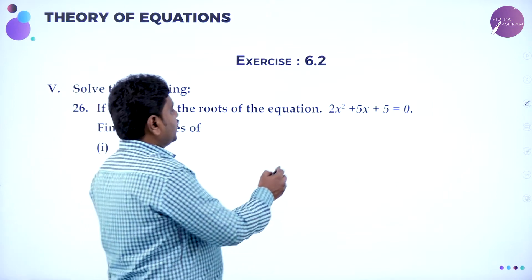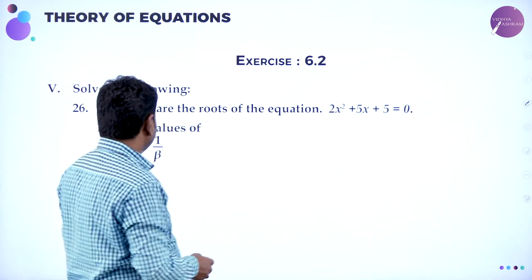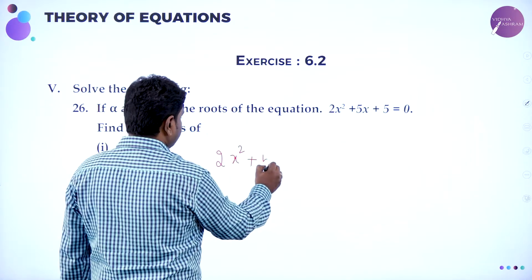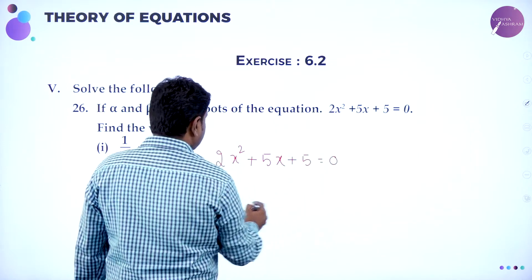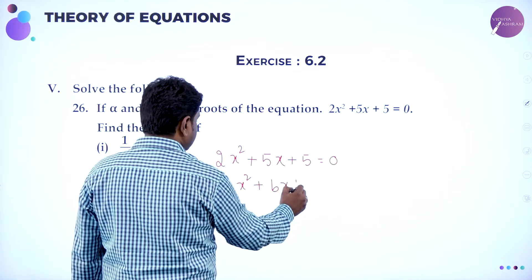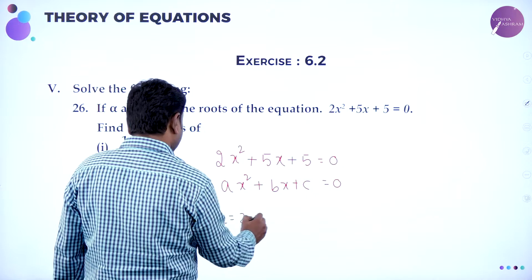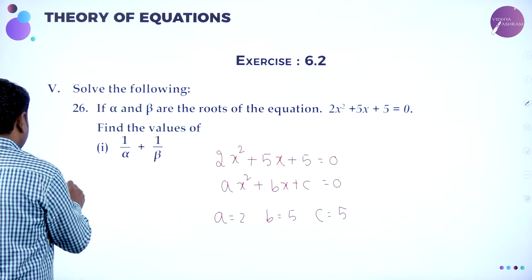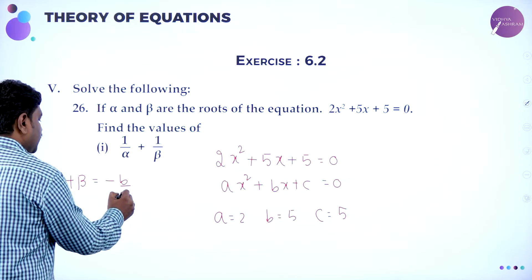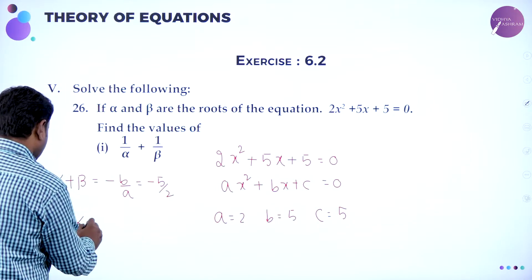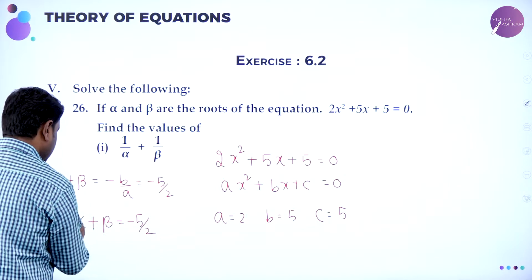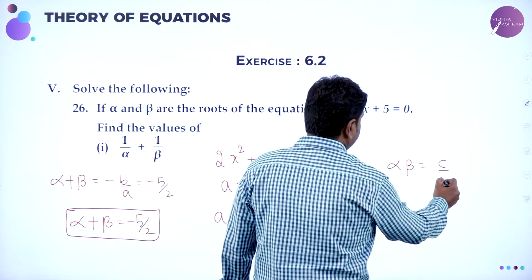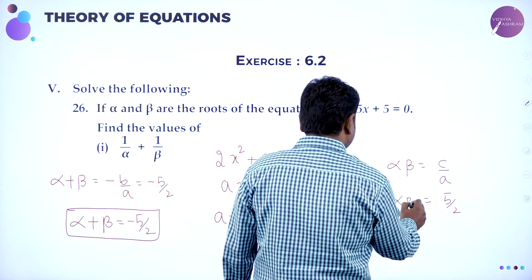Further, if alpha and beta are the roots of the quadratic equation 2x squared plus 5x plus 5 equal to 0, find the value of 1 by alpha plus 1 by beta. By method of comparison, A is 2, B is 5, C is 5. Sum of roots: alpha plus beta equals minus B by A, that is minus 5 by 2. Product of roots: alpha into beta equals C by A, that is 5 by 2.